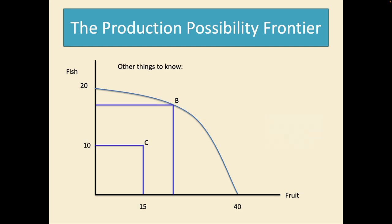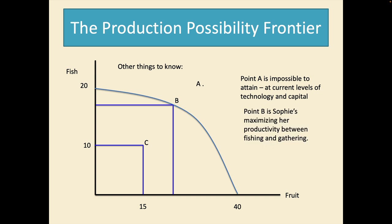Okay. Now moving on to other things that we need to know about. Let's have a look at point A which I've just popped on to above the PPF. Point A is impossible to attain at current levels of technology and capital for Sophie or anyone to get to. Hence the word frontier. You can't get beyond the frontier. Whereas point B in this case is Sophie's maximizing her productivity between fishing and gathering fruit. Now C is quite interesting. It's possible but it's not efficient. Sophie could be producing a lot more of either one or of both goods.